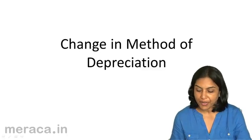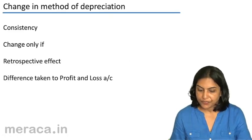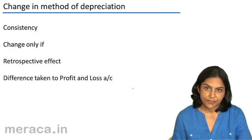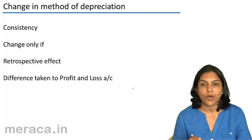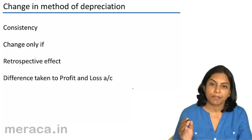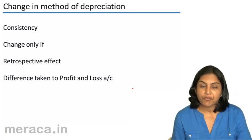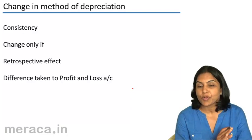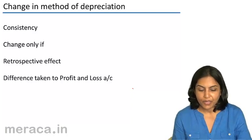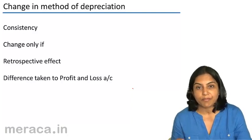Let us first discuss the change in method of depreciation. Strictly speaking, we need to be consistent. Our principle of consistency does not allow us to change from one method to another. A change in the method of computing depreciation is a change in accounting policy. If we do not consistently stick to one method, then the results for different years will not be comparable. We are expected to be consistent and are not supposed to change the method of depreciation.